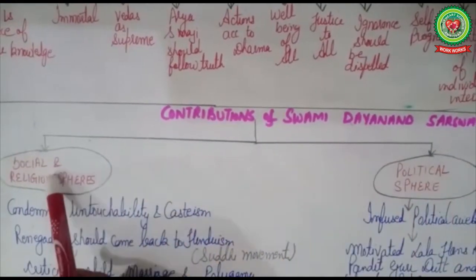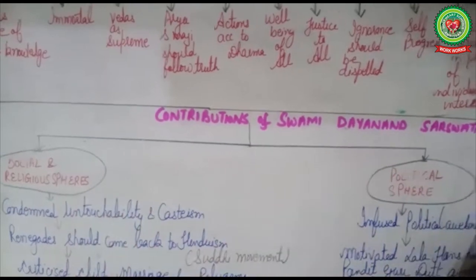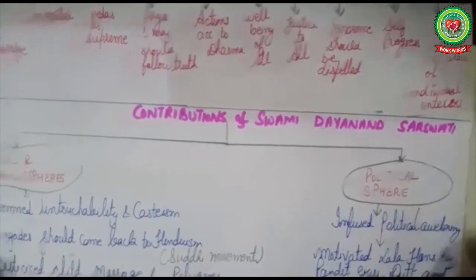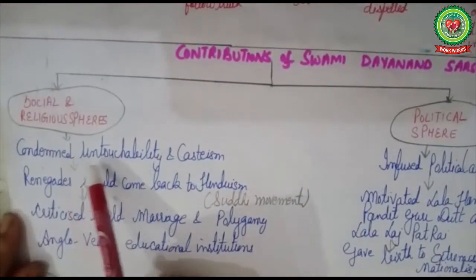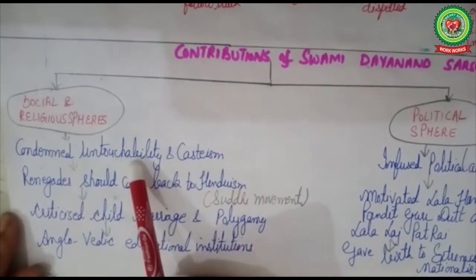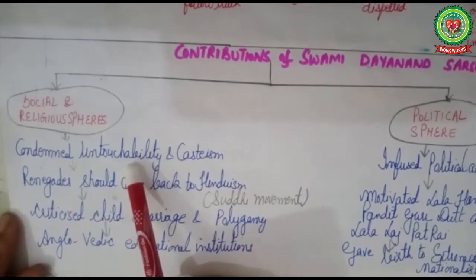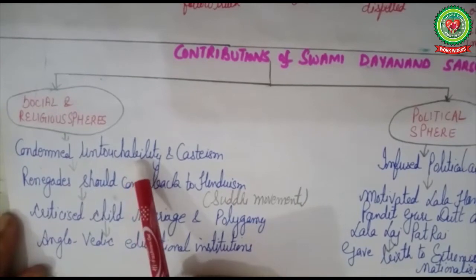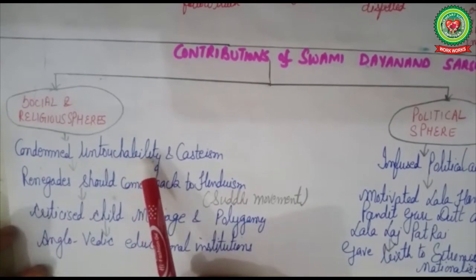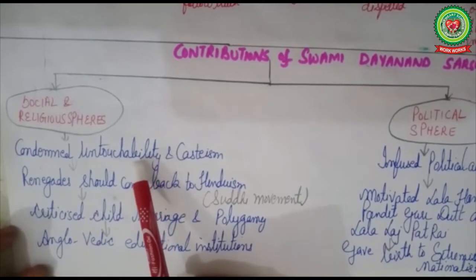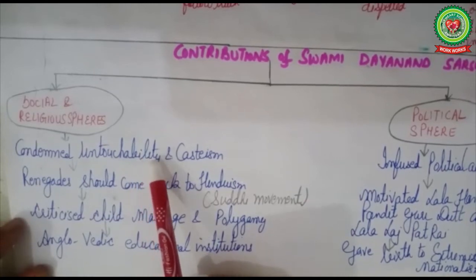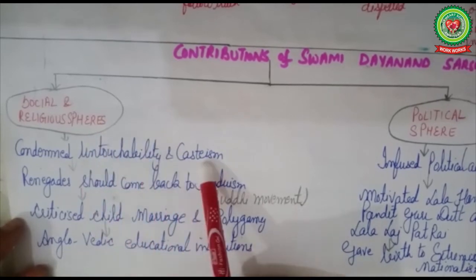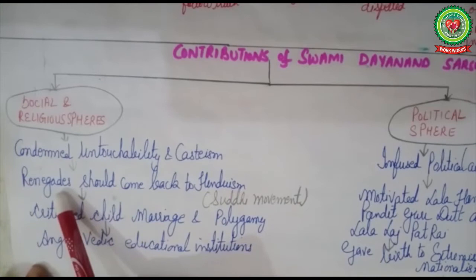Now we will discuss the contributions of Swami Dayanand Saraswati in social, religious, and political spheres. In the social and religious sphere, he condemned untouchability and casteism. Untouchability was a practice in which the upper-caste Brahmin treated the lower caste very badly, declaring themselves impure if touched by them. Swami Dayanand Saraswati refuted this idea of untouchability and casteism.